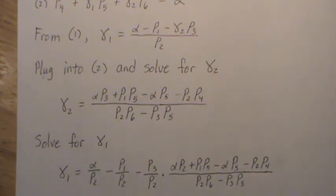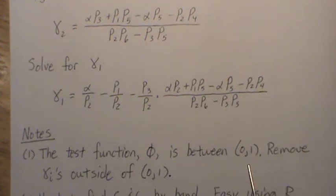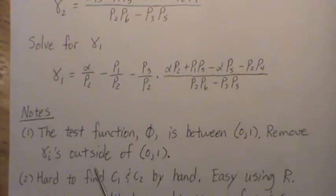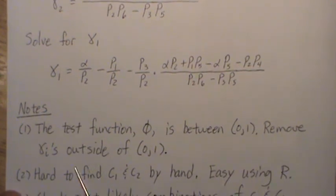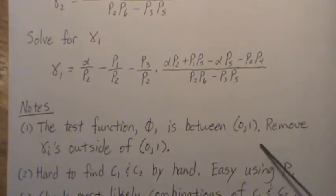And phi can only take on values 0 and 1. So if gamma 1 or gamma 2 is outside that range, and pretty much all of them will be except for one set, then you get rid of them. And you keep the gamma 1 and gamma 2 that are between 0 and 1. So we remove any gammas outside that, and then boom, we have a unique solution.